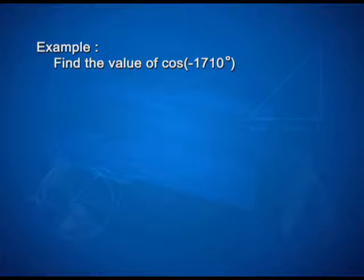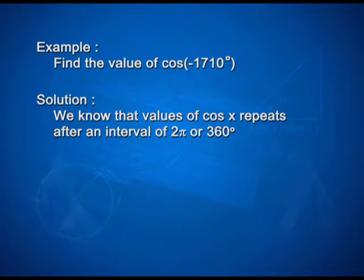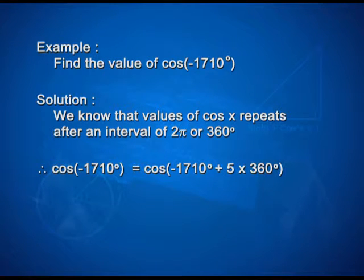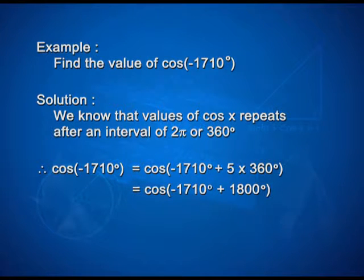One more example: find the value of cos(minus 1710 degrees). Solution: we know that values of cos x repeat after an interval of 360 degrees. Therefore, cos(minus 1710 degrees) can be written as cos(minus 1710 + 1800), which simplifies to cos(90 degrees), that is 0.